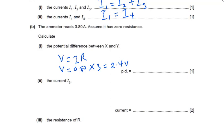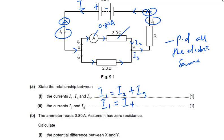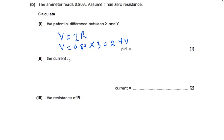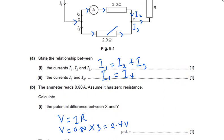These two resistors — 3 ohms and 2 ohms — are connected in parallel, so the potential difference across both is the same at 2.4 volts, even though they carry different currents i3 and i2 respectively. Now we move on to calculate the current i3.